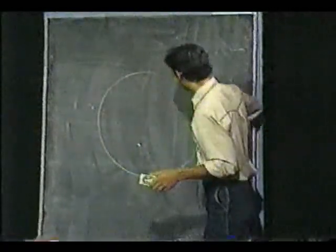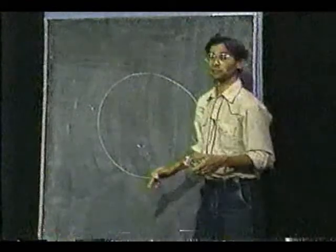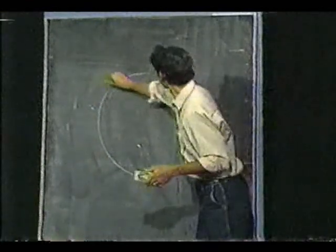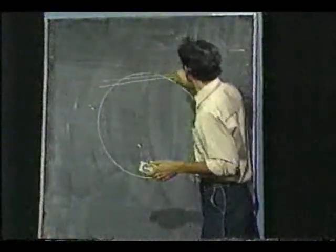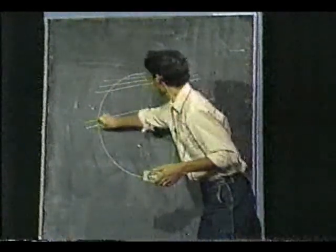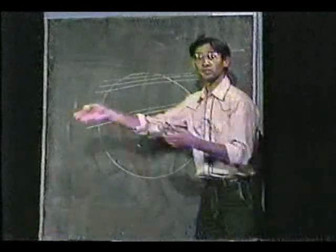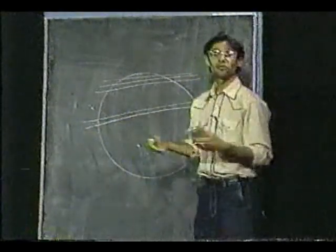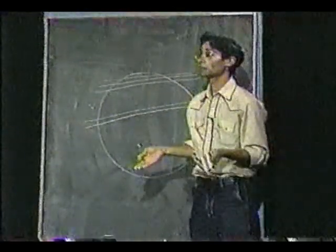Which is if you have a spherical pumpernickel and cut equal slices, one inch thick, and distribute the slices to people, everyone gets a different amount of bread. Well that's obvious.